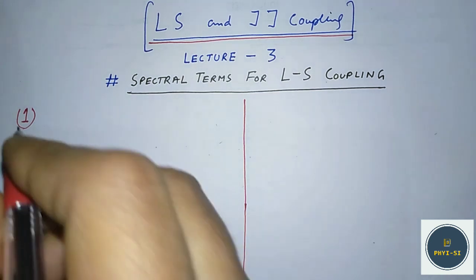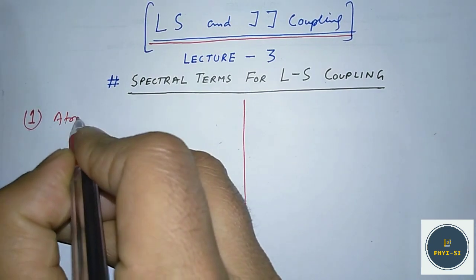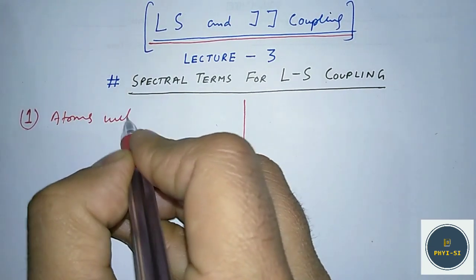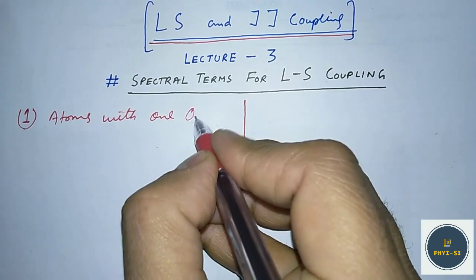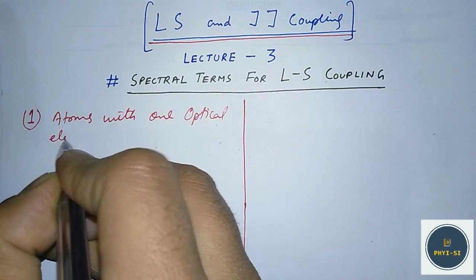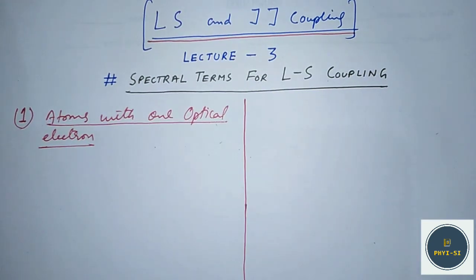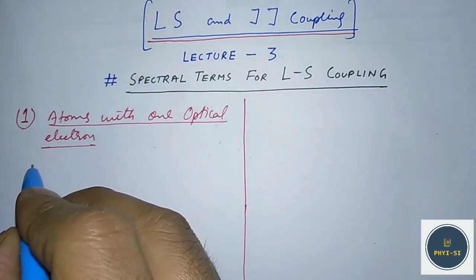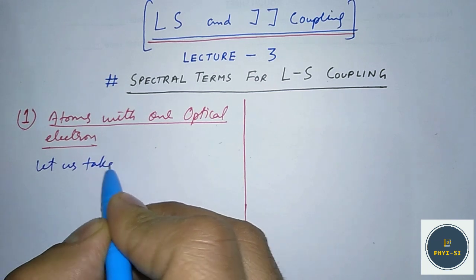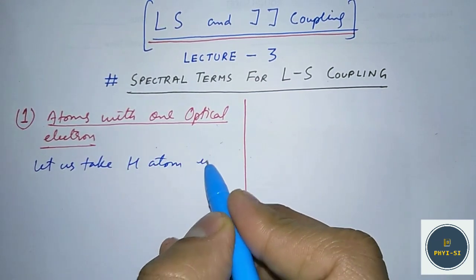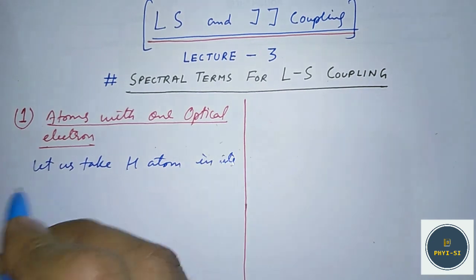In this particular video we will find these spectral terms for atoms which have one optical electron. When we say an atom with one optical electron, we always think about the hydrogen atom. So let us take the hydrogen atom in its ground state.